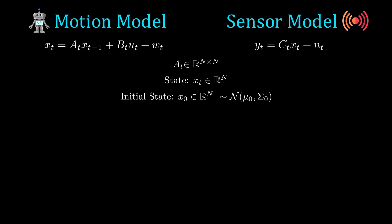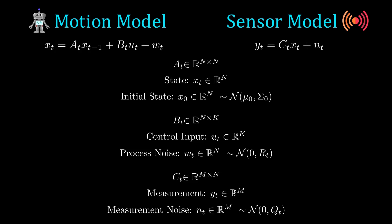First, we need to define the motion and sensor models. Here, Xt is our state at time t and X0 is the initial state. UT is the control input for state Xt-1 and Wt is the noise of the process. On the sensor model side, we have Yt is the measurements we receive and NT is the sensor noise. The first key assumption made compared to the general Bayes filter is that our nonlinear F and G motion and sensor model functions are now linear. As such, A, B, and C are constant matrices.